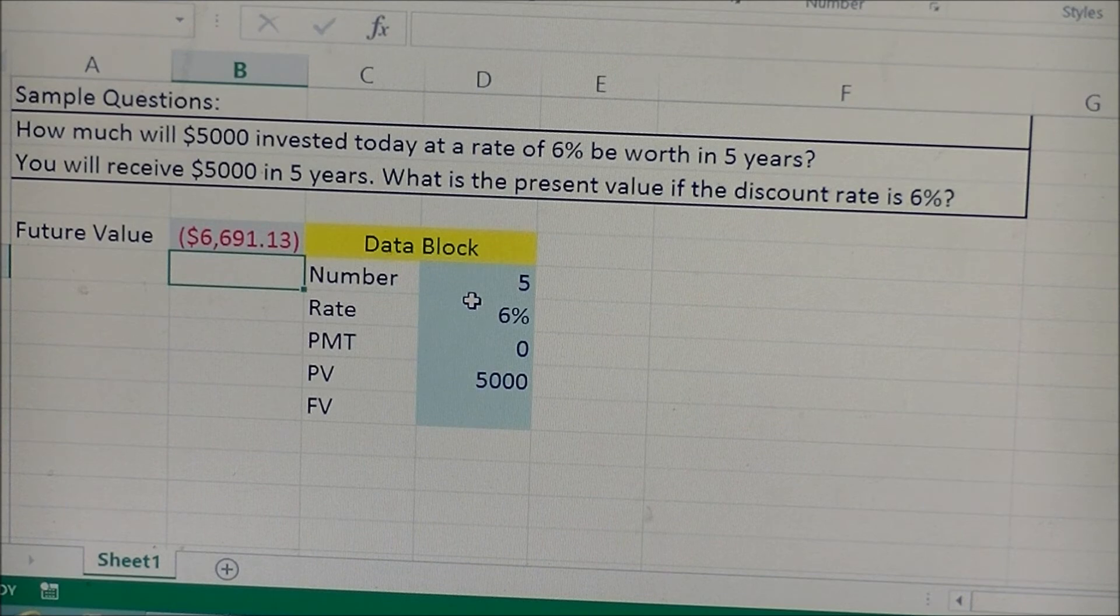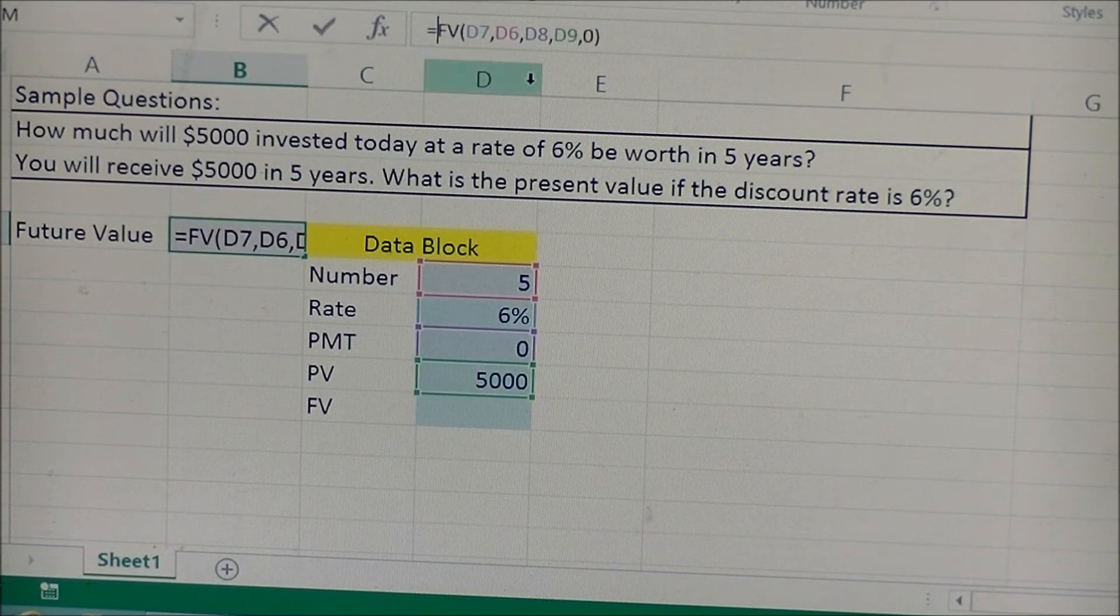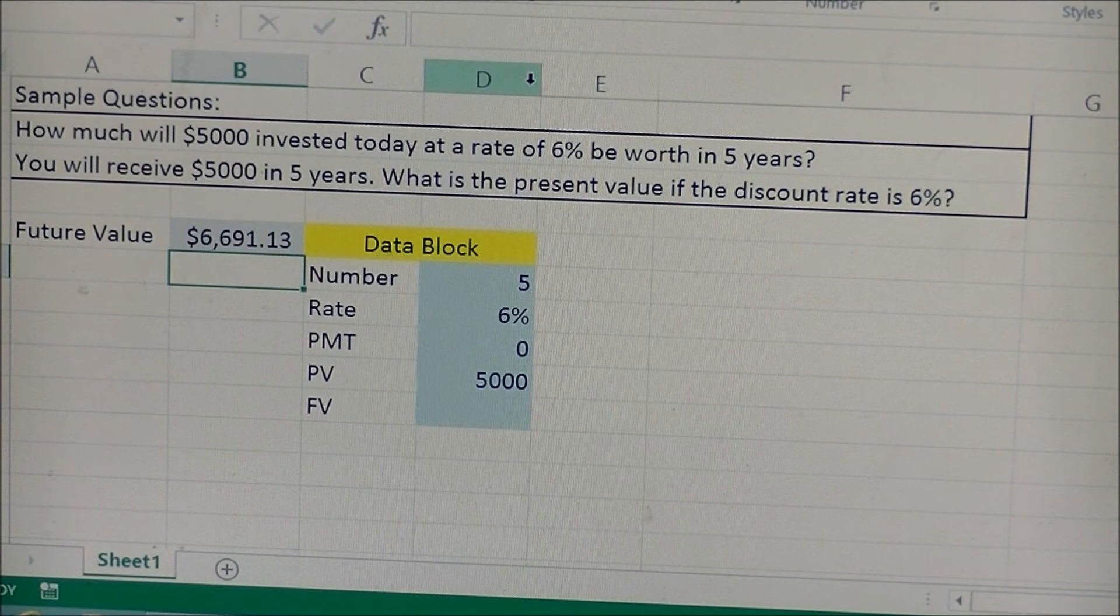And then we just close the parenthesis, and what it gives us back is a negative number. To take care of your negative number, you go into your formula, you put your cursor between the equal sign and the future value, and you put a negative sign. Press enter, and now we have our future value, which will be $6,691.13.